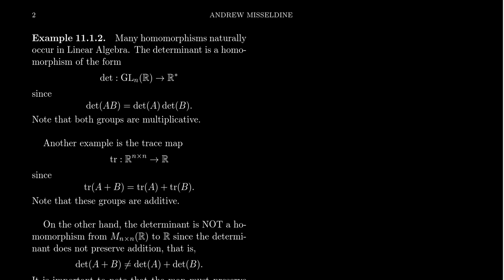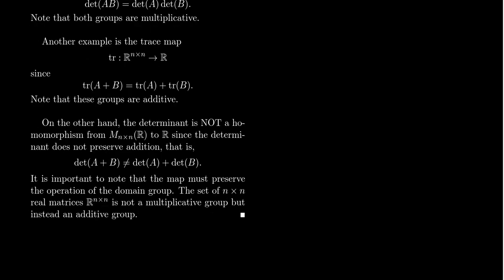In order for two groups to be homomorphic, we don't necessarily have to have the same name for the operation — addition to addition, multiplication to multiplication. The determinant, for example, is not a homomorphism with respect to addition on R^(n×n): det(A+B) is not equal to det(A) + det(B). So it doesn't preserve the addition of matrices. Determinants preserve the multiplication of matrices — it's this multiplicative homomorphism.